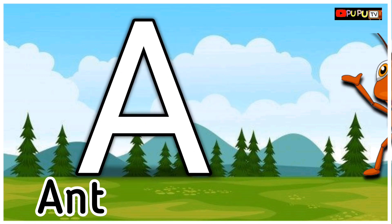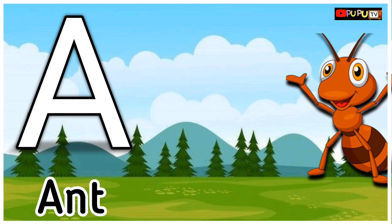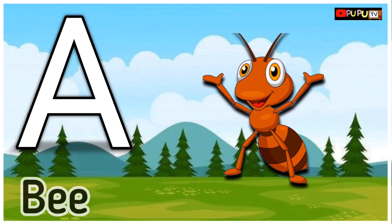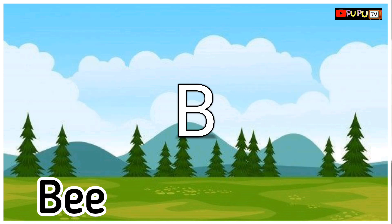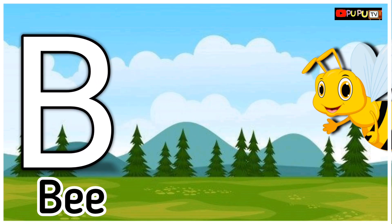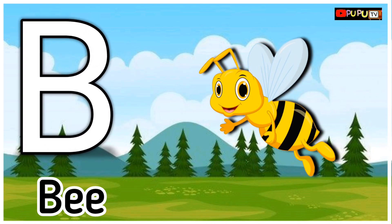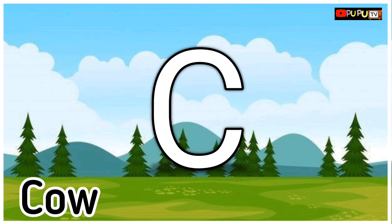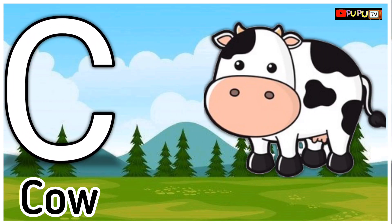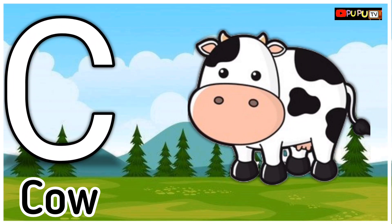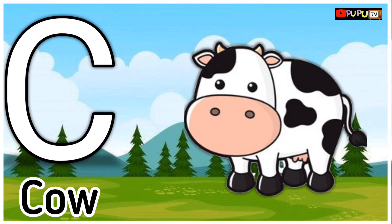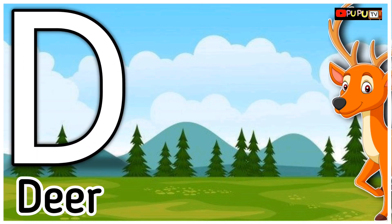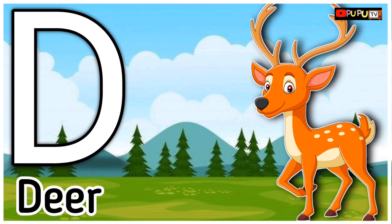A. A for Ant. B. B for Bee. C. C for Car. D. D for Deer.